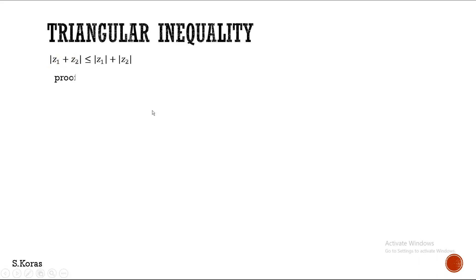You know this property? That is, modulus of Z squared is Z into Z bar. So, if you square it, you will have two complex numbers in this way — that is, Z into Z bar.